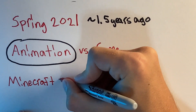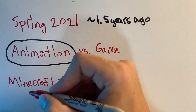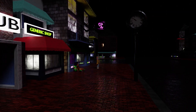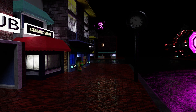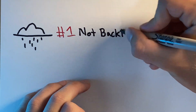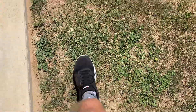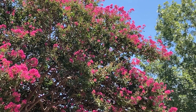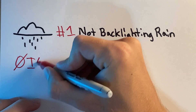I decided to make a little Minecraft animation. I had a scene where the character was going to walk into a bar and it was supposed to be raining outside. But if you look at the scene, you'll notice there's absolutely no rain. This is the first mistake I made: not knowing to backlight rain. I had no idea how to do it going into 3D.